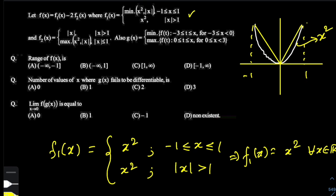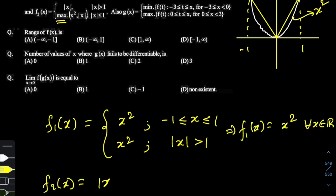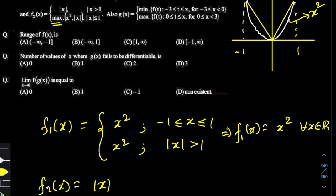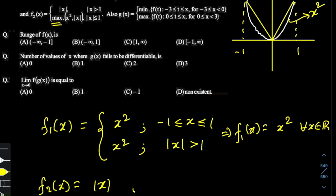Similarly we find f2(x). So f2(x) is |x| when |x| is greater than one, and max of x² and |x| when |x| is less than or equal to one. I've already made the graph of |x| and x² on the same coordinate axes. Between minus one to one, taking the max means the higher of the two, which is clearly |x|. So f2(x) is just |x| — because when |x| > 1 it follows |x|, and when |x| ≤ 1 it also gives |x|. Overall, f2(x) = |x| for all real x.